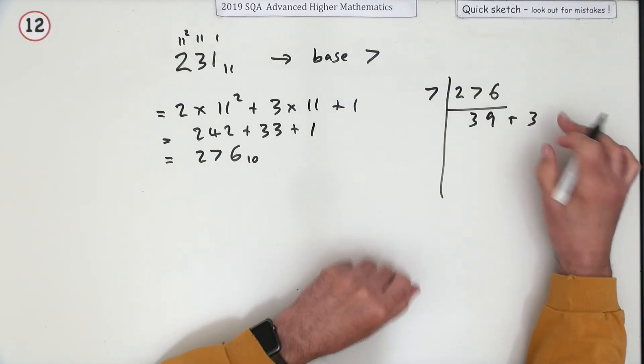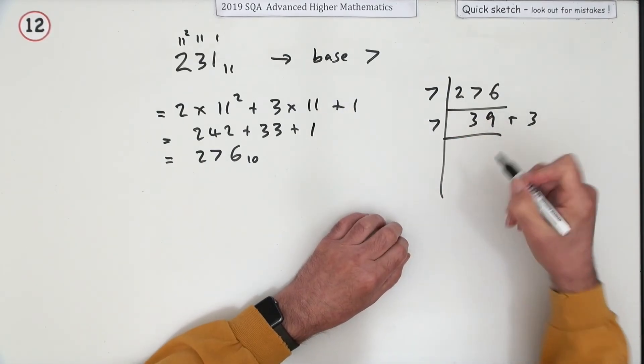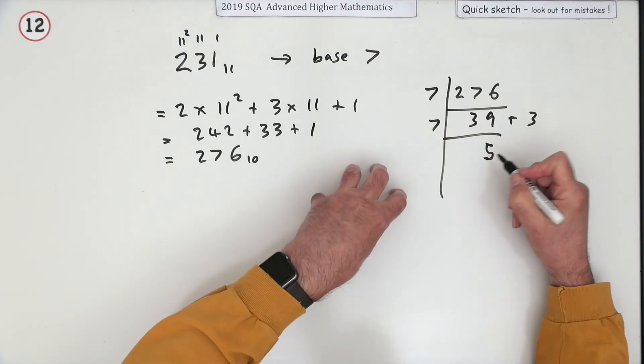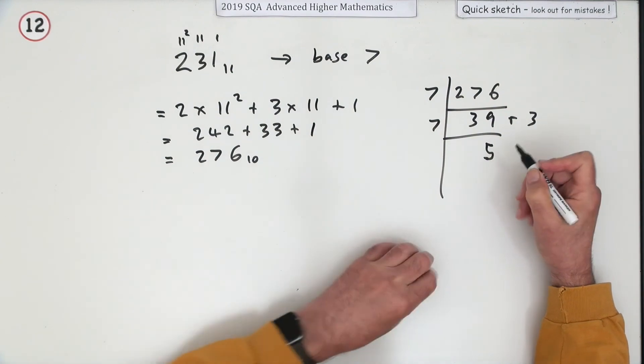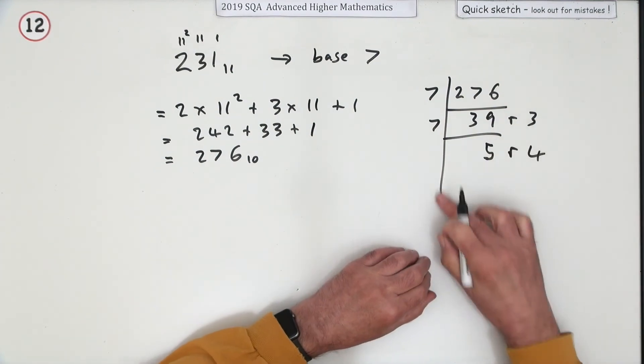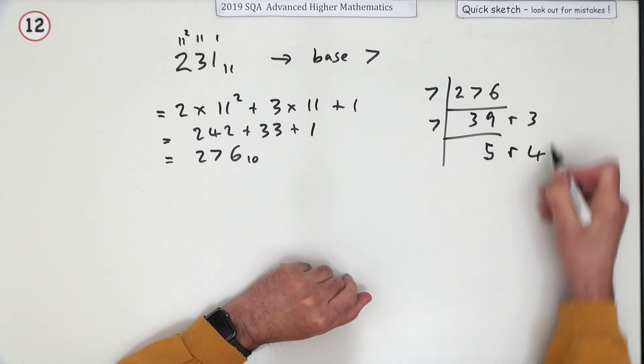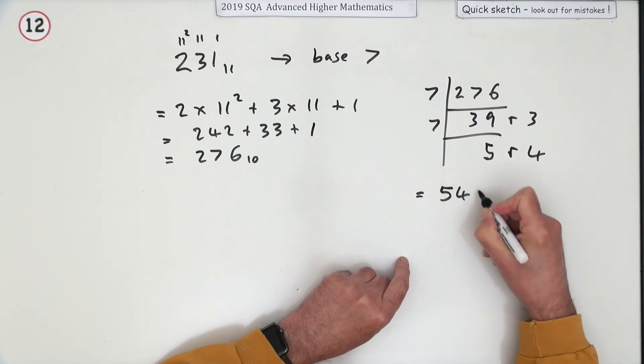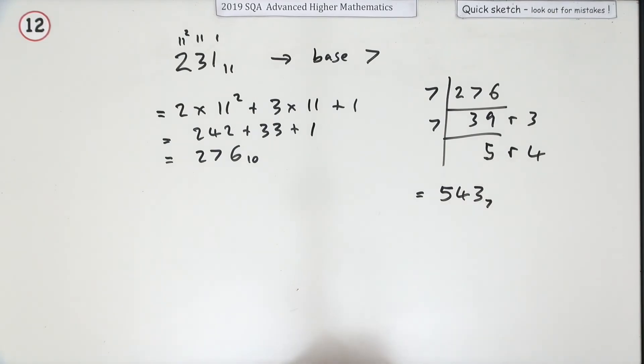Now take your piles of 7, divide by 7. That makes 5, so there's 5 piles with 7 sevens in it and 4 left over. That's all you need to do. Just read them backwards, so that number becomes 543 base 7.